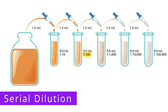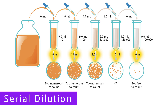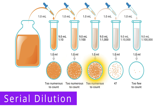We do this three more times, and a 1 milliliter sample is taken from each tube and plated on solid media using the pour plate or spread plate method. The tube with the 1 to 10 dilution was not dilute enough — it produced so many colonies that we cannot count them. The same was the case for the 1 to 100 and 1 to 1000 dilutions. The fourth tube, however, produced 47 colony-forming units, which is between 30 and 300 — perfect.